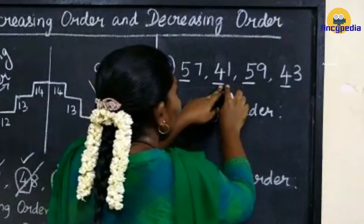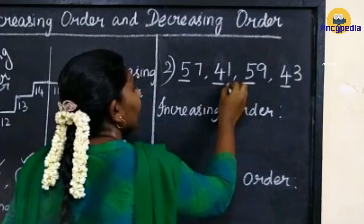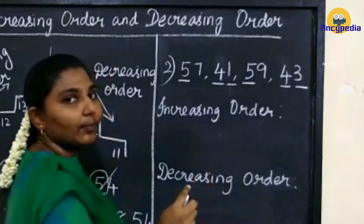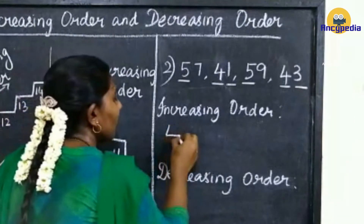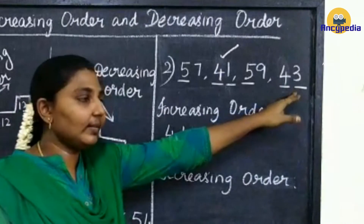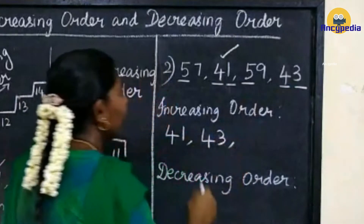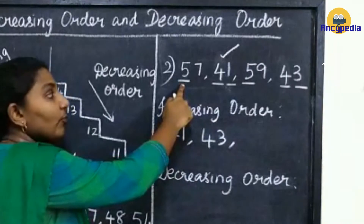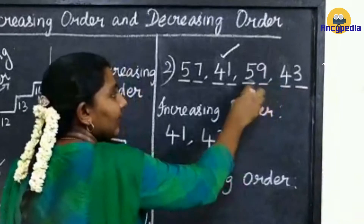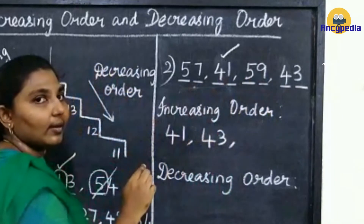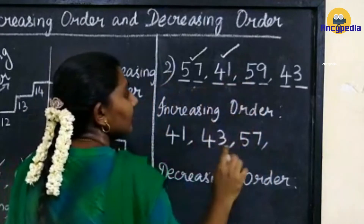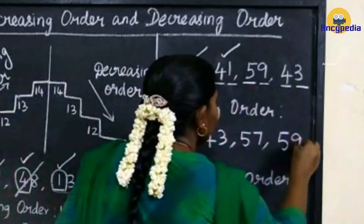So you have to compare the digits in the ones place. Here we have 1 and here we have 3. Which one is smaller — 1 or 3? 1 is smaller. So you have to write 41, next write 43. In the other two numbers we have 5 in the tens place, so we compare the ones place: here we have 7 and here we have 9. Which one is smaller — 7 or 9? 7 is smaller. So first we have to write 57, next 59.